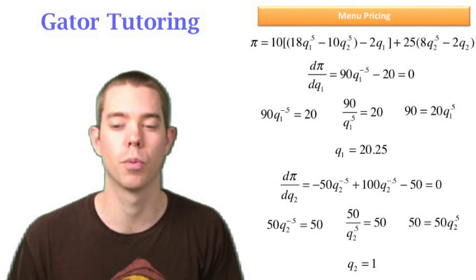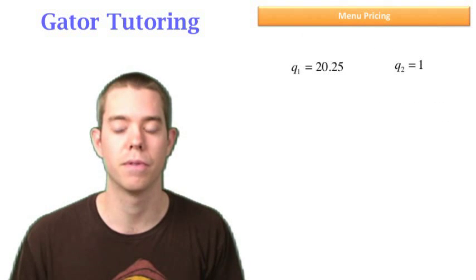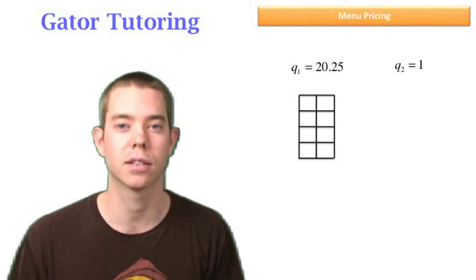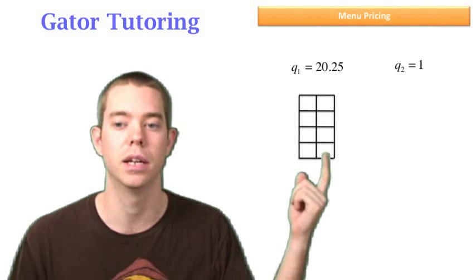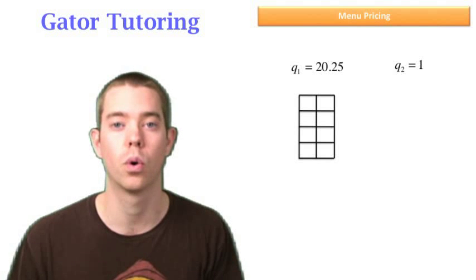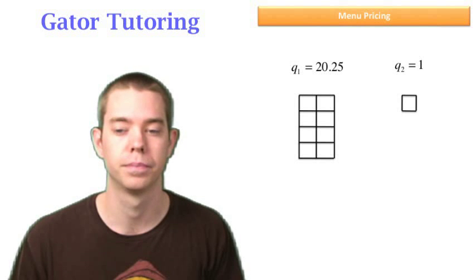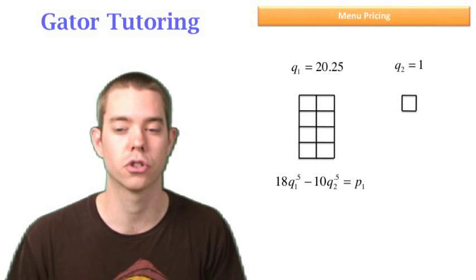So real quick before we answer the question, let's take a look at what we did. We found Q1 and we found Q2. I want to draw you a little picture to make this easy to think about. Q1 represents that big box of gum with several packs of gum in it. Now, I drew 8 here but just think about it, it's really 20.25. Q2 represents that single pack of gum. To find the price of the first package, we already found that through the constraint, we would just plug in Q1 everywhere we see it. And we'd have to plug in Q2 also.